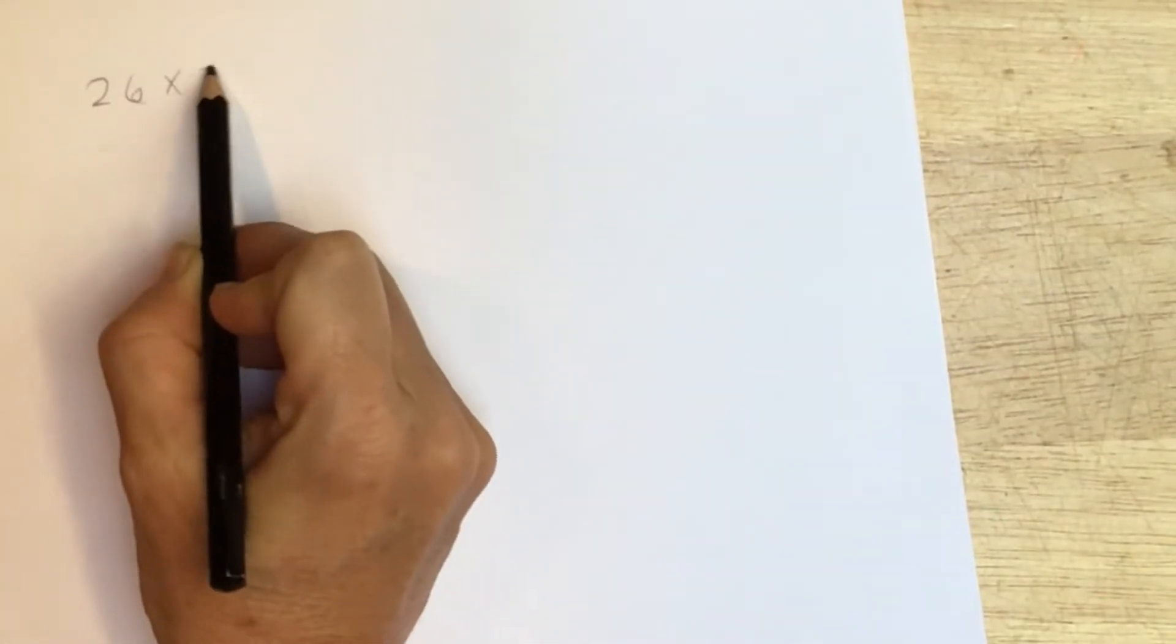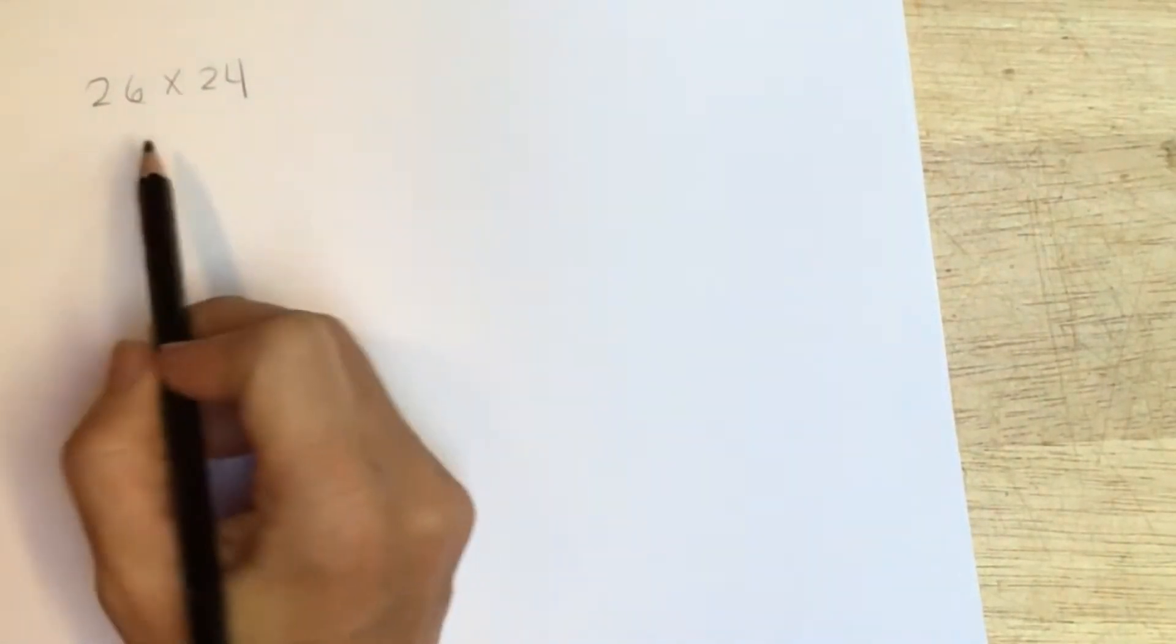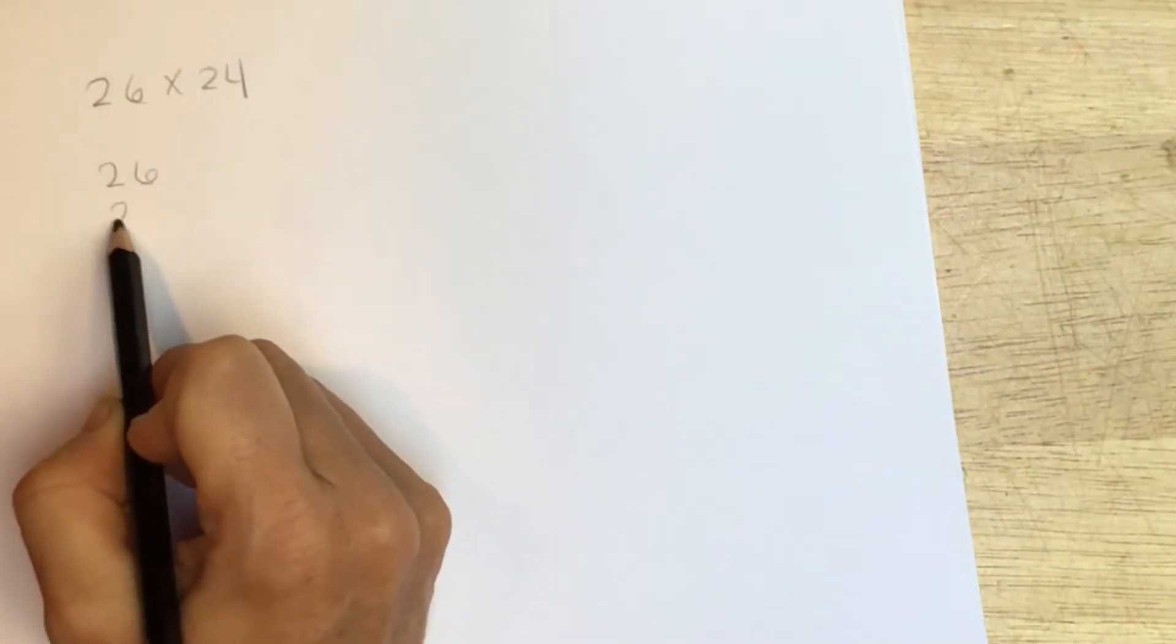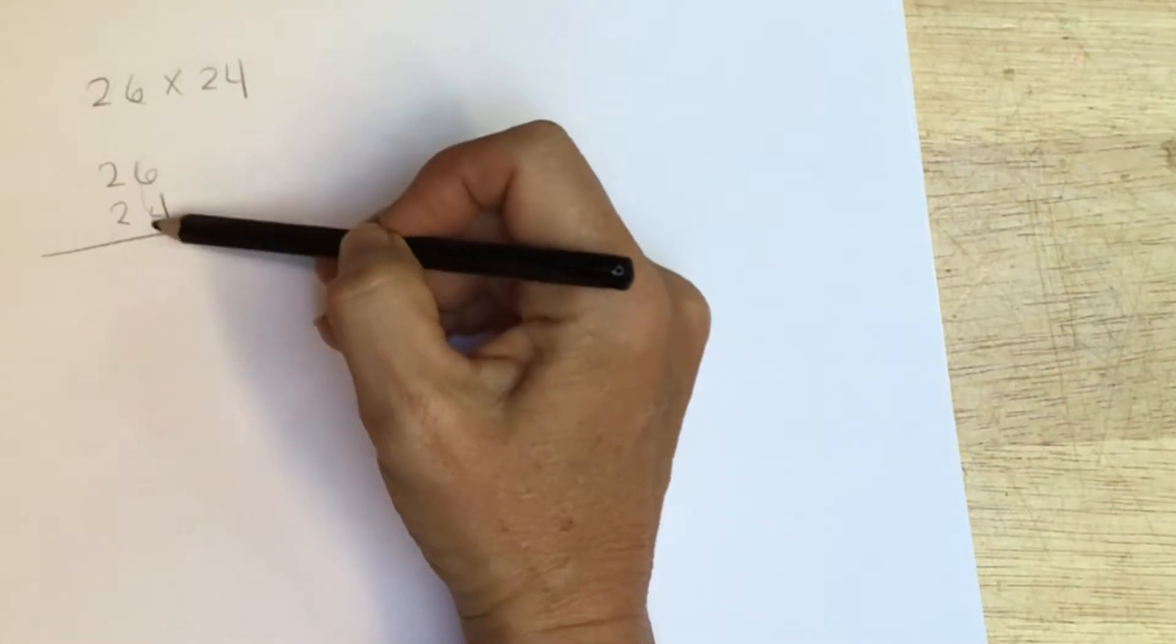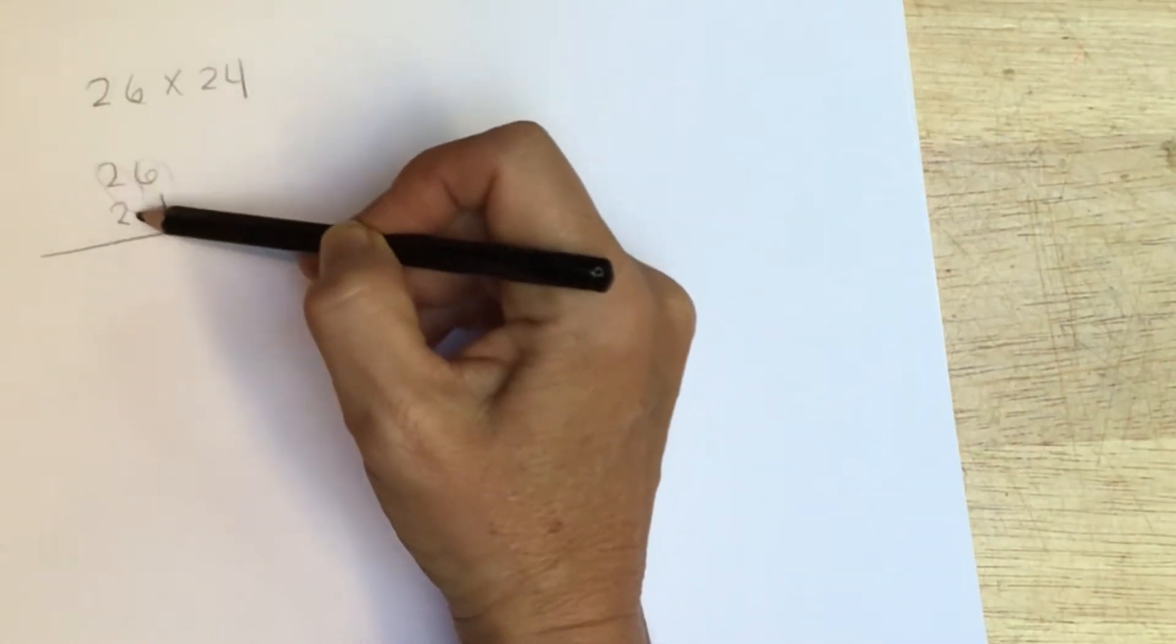Hi everybody, this is Della from the Beauty of Play and today I'm going to talk about the Vedic method of multiplication. I want to start by looking at what the standard algorithm is for multiplication. So if we look at a number like 26 times 24, in the standard method of multiplication we multiply the ones and then the tens.